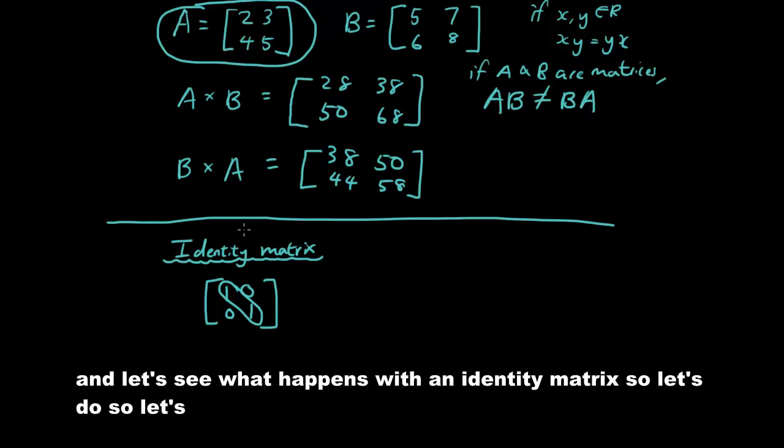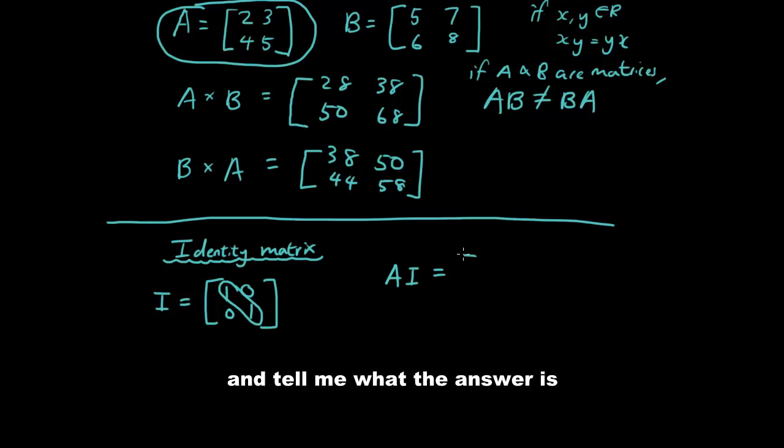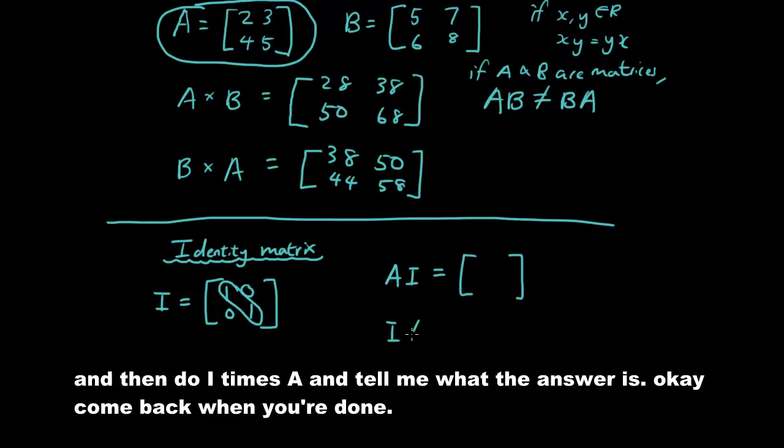And let's see what happens with an identity matrix. So let's give it a symbol I. So I want you guys to now try A times I and tell me what the answer is. So using the A from above. And then do I times A and tell me what the answer is. Okay, come back when you are done.